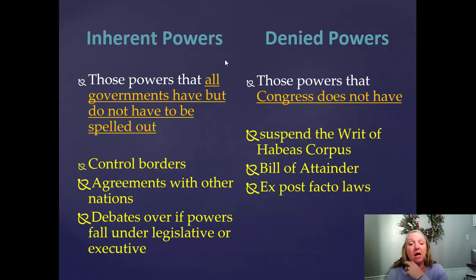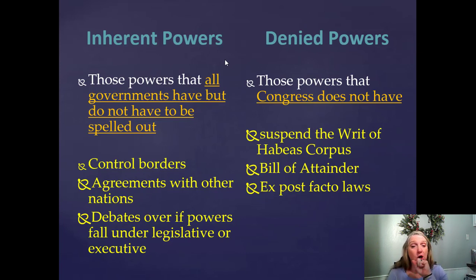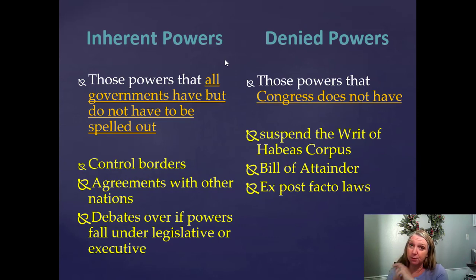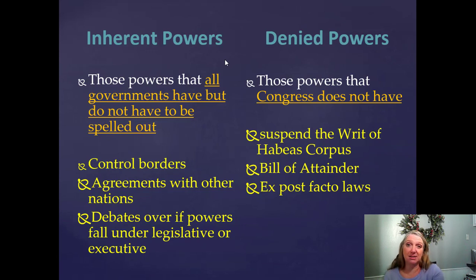There are also denied powers — things the Constitution explicitly forbids Congress from doing. Congress cannot suspend the writ of habeas corpus, which is the right to go before a judge and be told what you're being charged with. Suspending it means you can throw people in jail and leave them there. Lincoln did suspend it during the Civil War as the executive — not Congress — and while there were challenges, the Supreme Court never truly ruled on whether that action was allowed.